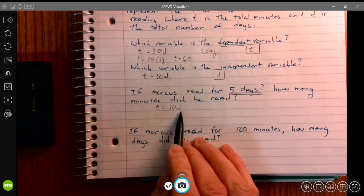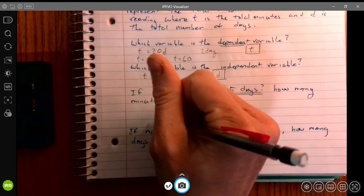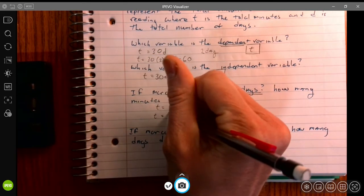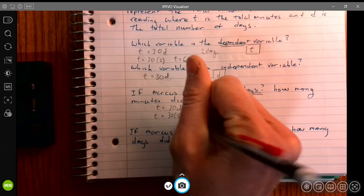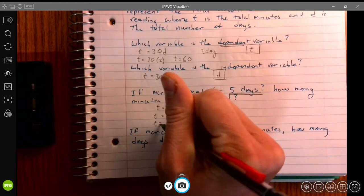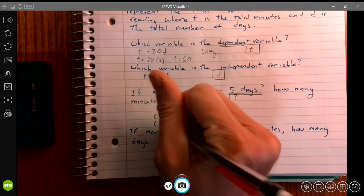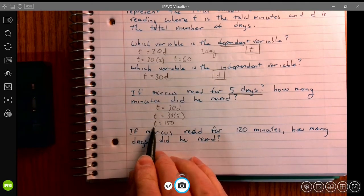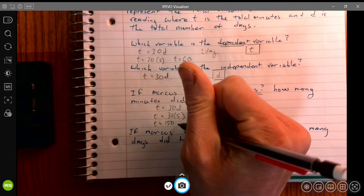d stands for days, so I can plug in five for d. 30 times five is 150, so the time he spent reading was 150 minutes.